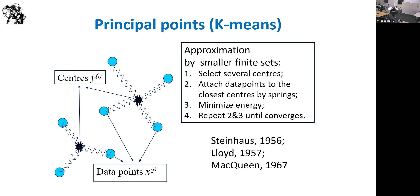Everybody who pretends to be a data scientist or AI practitioner must know PCA and K-means with all the details. The K-means algorithm: select centers, attach data points, minimize energy, then repeat until convergence. Convergence occurs in a finite number of steps to a rather good local minimum. If you want a global minimum, reiterate using heuristics. Both PCA and K-means are like two plus two — you cannot work with data analysis without them.